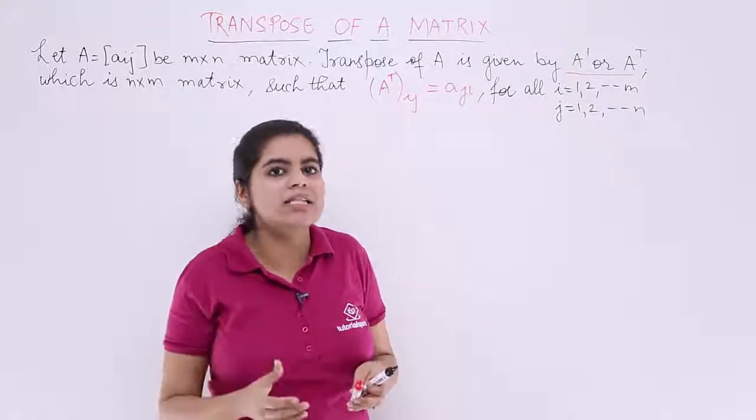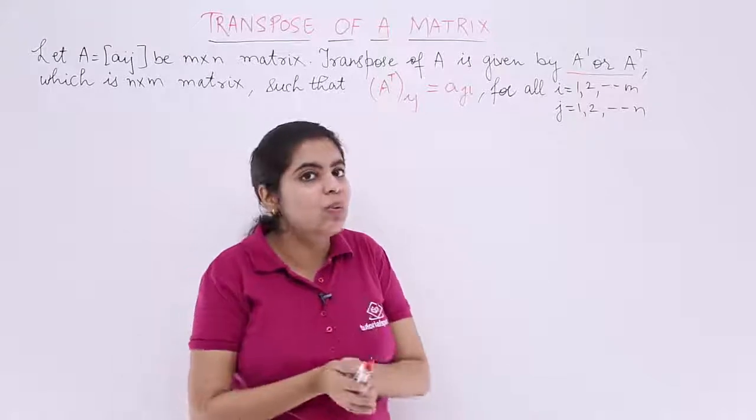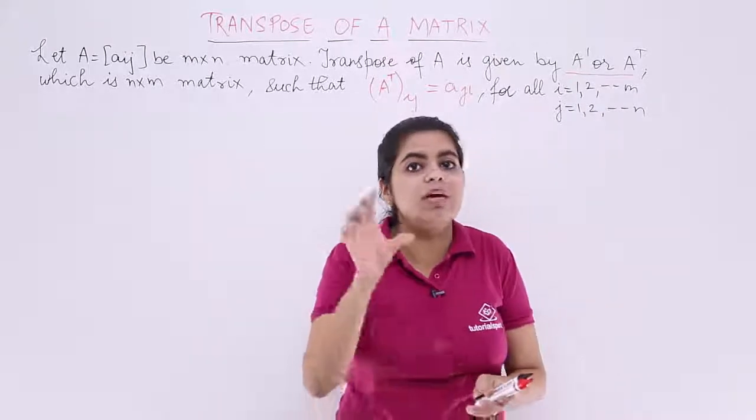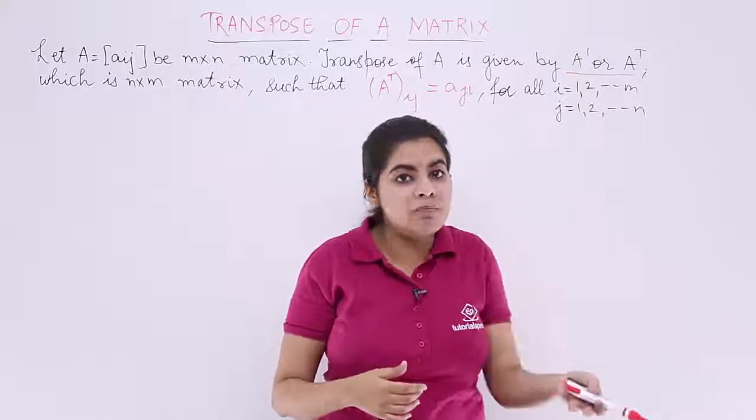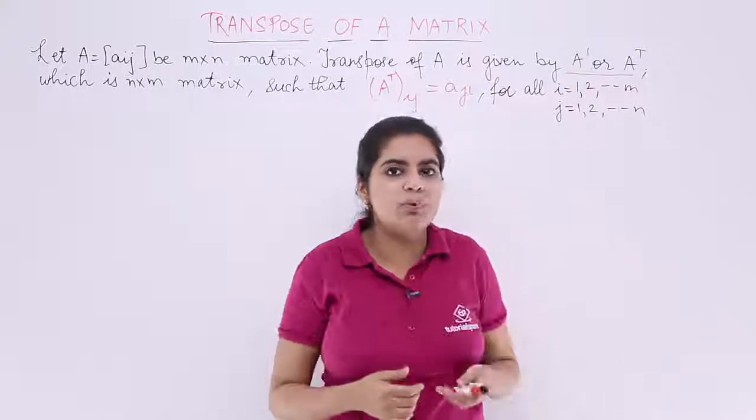It is denoted as the transpose of the given matrix. If you have Aij, the transpose would be Aji. If you have m by n order, the transpose would be n by m.